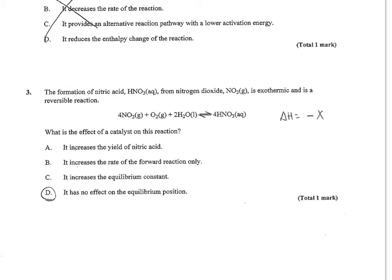Number 3 looks at the formation of nitric acid from nitrogen dioxide, which is exothermic and reversible. We're looking at what effect does a catalyst have. Remember, a catalyst increases rate. It affects forward and reverse reactions equally and lowers the activation energy. What it doesn't affect is the equilibrium or the yield. So increases the yield? Not true. Increases rate of forward reaction only? Not true. Increases equilibrium constant? Not true. Has no effect on equilibrium position? That's true. It only affects rate.